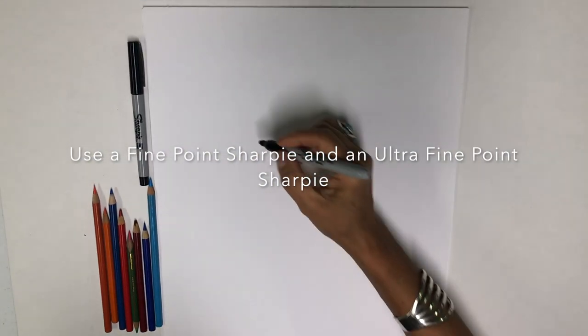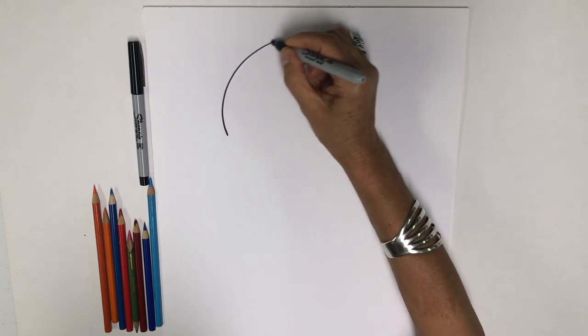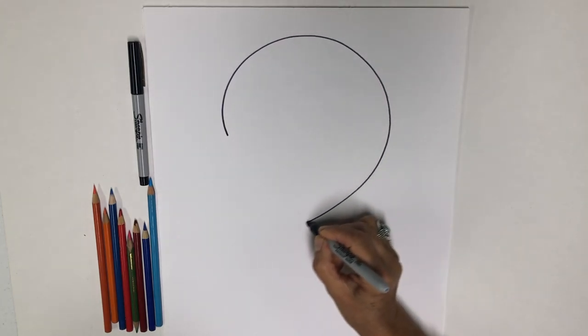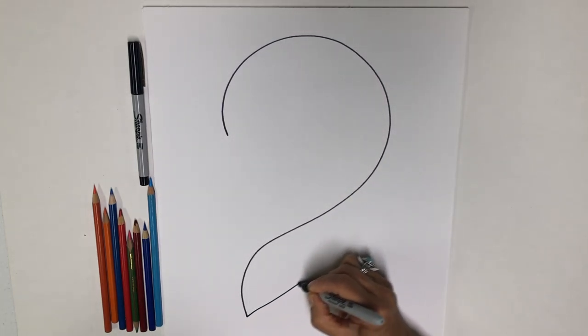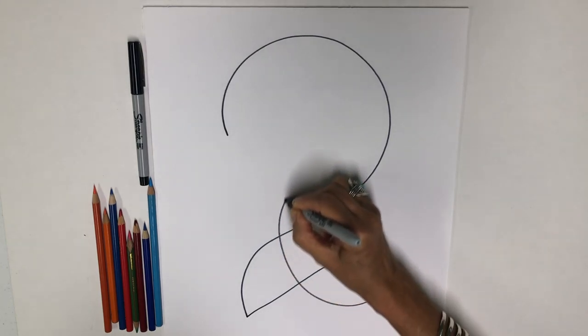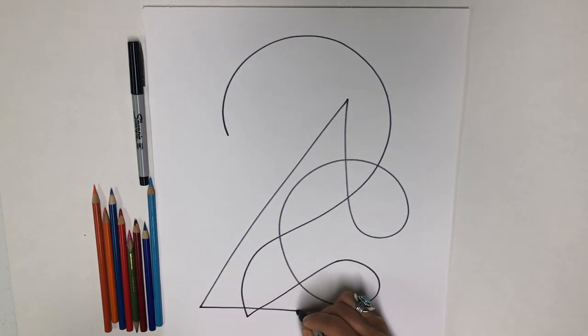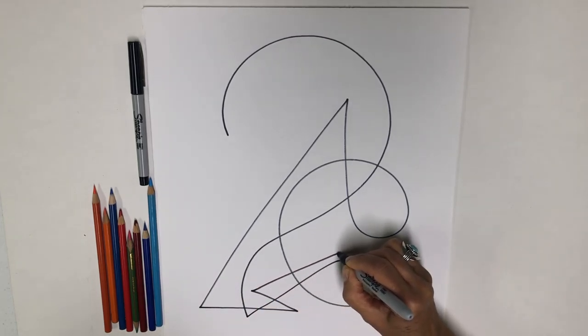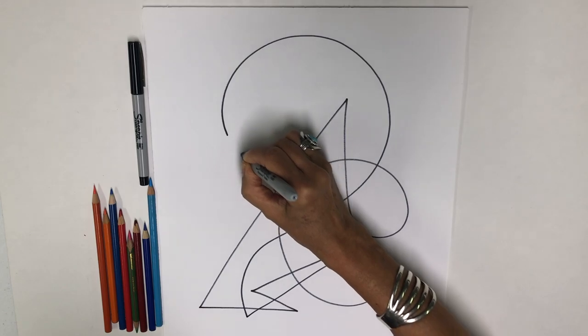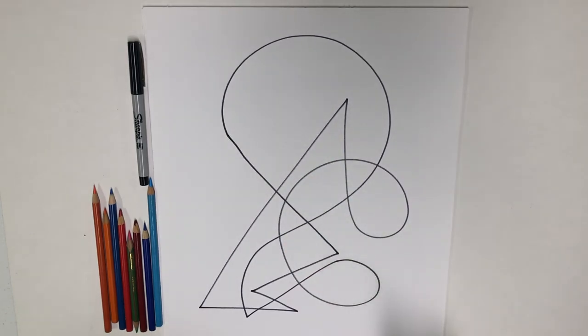Without lifting your sharpie, create a continuous line with free movements, creating some angles, zigzags if you want. And then the end of the line will meet up with the start of the line. That's my basic shape.